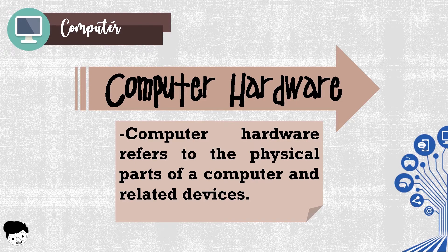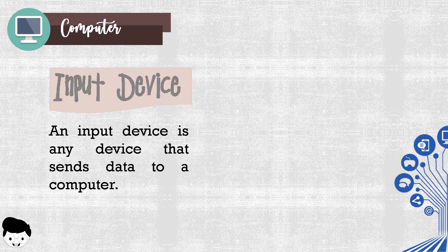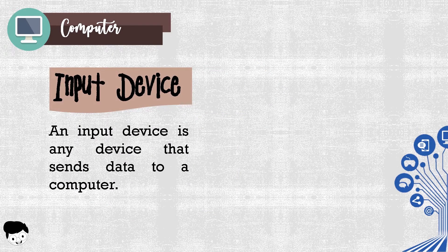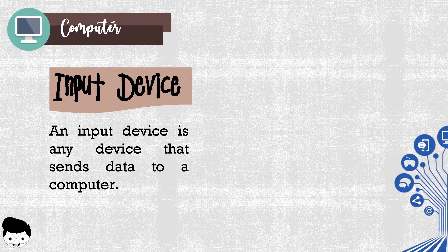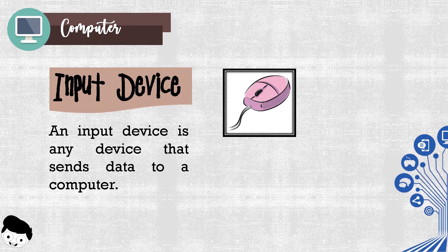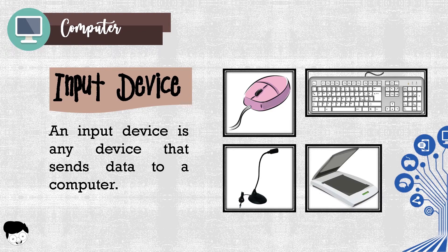These are devices that you can touch. Components of computer hardware: Input device. An input device is any device that sends data to a computer, or it enables you to enter data and instructions into a computer. These are the examples of input devices: mouse, keyboard, microphone, and scanner.